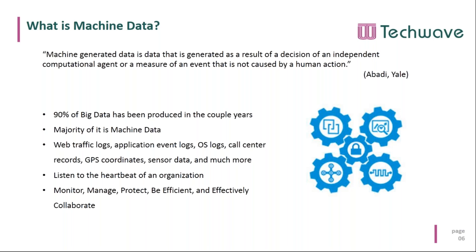Machine data helps us listen to the heartbeat of an organization. Think about a doctor — when he listens to your heartbeat, he can diagnose conditions like blood pressure or heart conditions. Similarly, using machine data to listen to an organization's heartbeat can have great impact: it can help us monitor, manage, protect, increase efficiency, and collaborate across different departments and layers, helping drive businesses and markets.